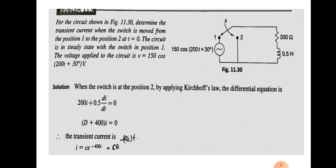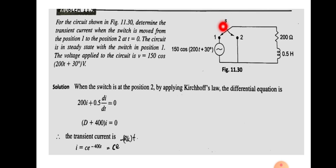The circuit diagram shows two switch positions 1 and 2. Initially the switch is connected to position 1, meaning the switch is closed at that point. At t equal to 0, the switch moves from position 1 to position 2, which means there is no longer a connection with point 1 — that part becomes an open circuit.